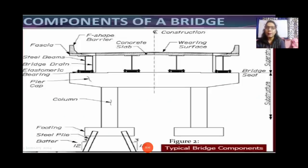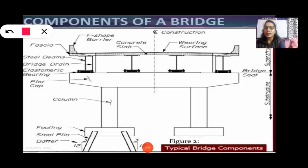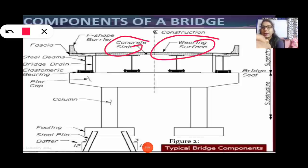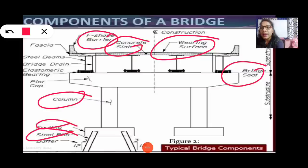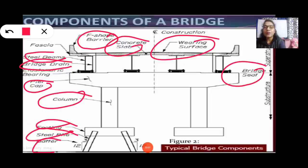Components of a bridge: here is the given structure of the bridge with different types of components — bearing surface, concrete slab, FC barriers, bridge seat, column, coating, steel piles, batter, fire cap, bridge drain, and steel beam. These are the different parts of a bridge.